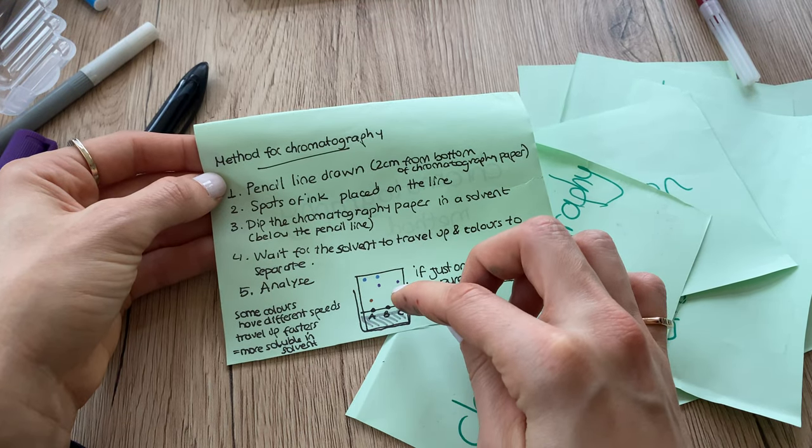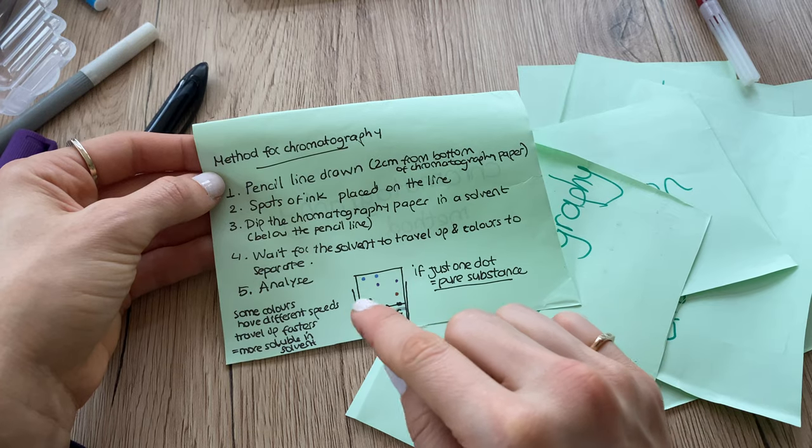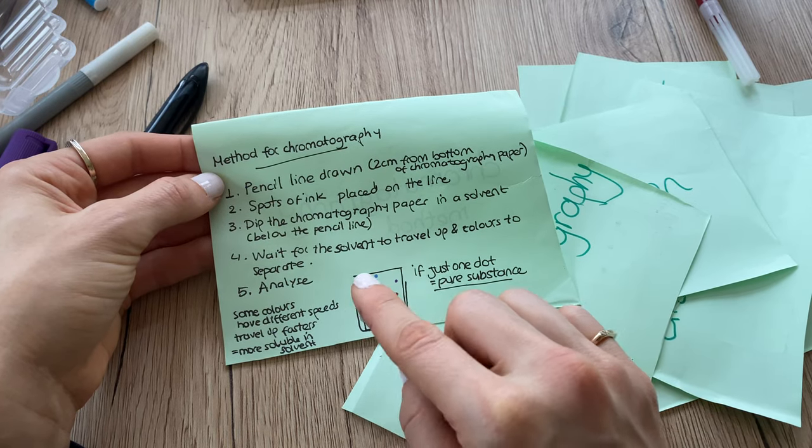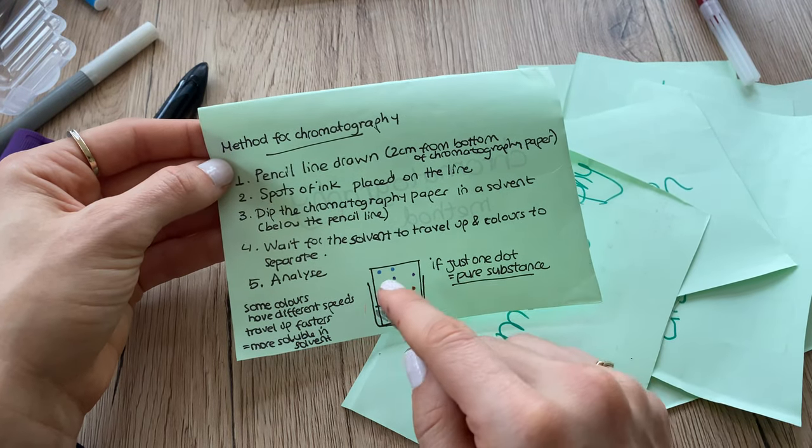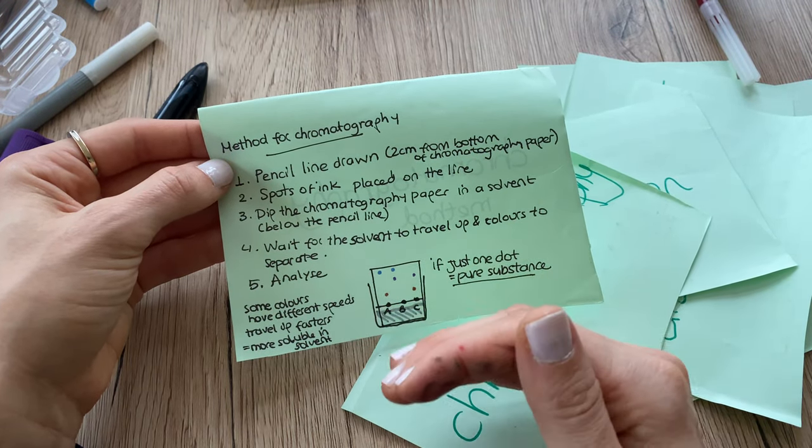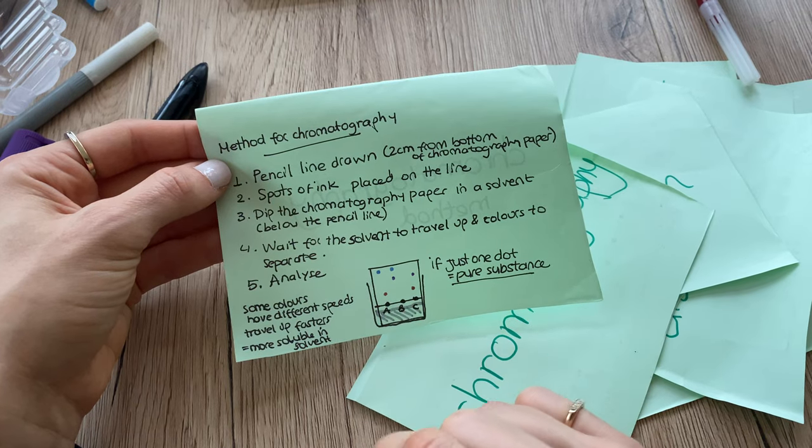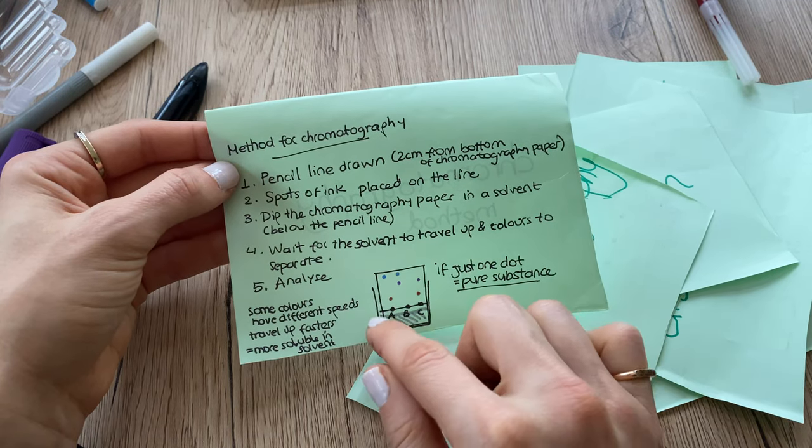They travel up faster if they're more soluble in water. If they're less soluble in water or ethanol they're going to be traveling slower, so you can tell which one's more soluble. The blue dots are more soluble because they traveled up faster with the solvent, whereas the brown dots are further down, so they are less soluble in water, considering we have water here.